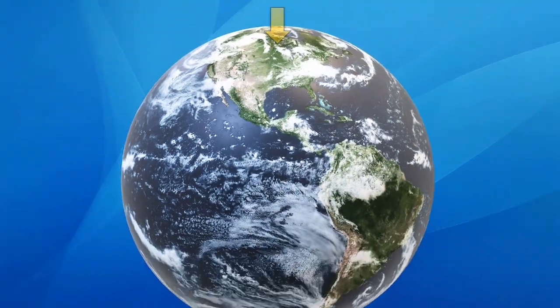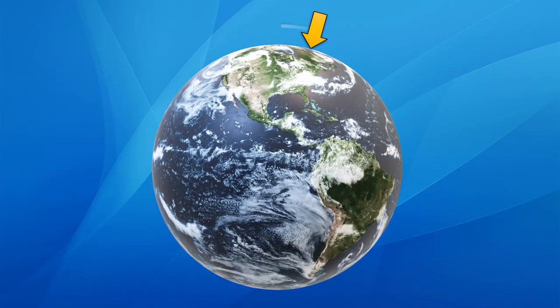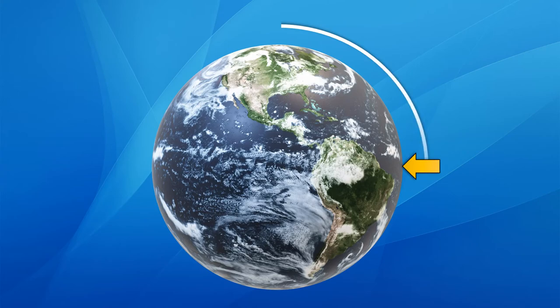This Coriolis phenomenon requires a ball-shaped Earth because you need it to spin but at different speeds, and only unequal distances, as on a ball, can achieve that.